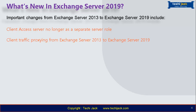Client traffic proxying allows you to proxy traffic to and from Exchange Server 2013 to Exchange Server 2019 during coexistence, so you can continue using your current Client Access Server running Exchange Server 2013. The Outlook on the Web interface has been updated and optimized for mobile devices and tablets, with full support for iOS and Android clients. It also features improved email functionality, an optimized reading pane, the ability to undo mailbox actions, a new calendar look with email reminders, improved search, and birthday calendars.